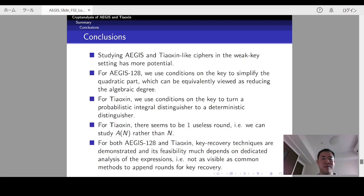At last, we draw some conclusions of this talk. First, attacking AEGIS Tiaoxin-like ciphers in a weak-key setting has more potential. Second, for AEGIS-128, we use conditions on the key to simplify the quadratic part of the observable output, which can be equivalently viewed as reducing the algebra degree. For Tiaoxin, we use conditions on the key to turn a probabilistic integral distinguisher to a deterministic distinguisher.